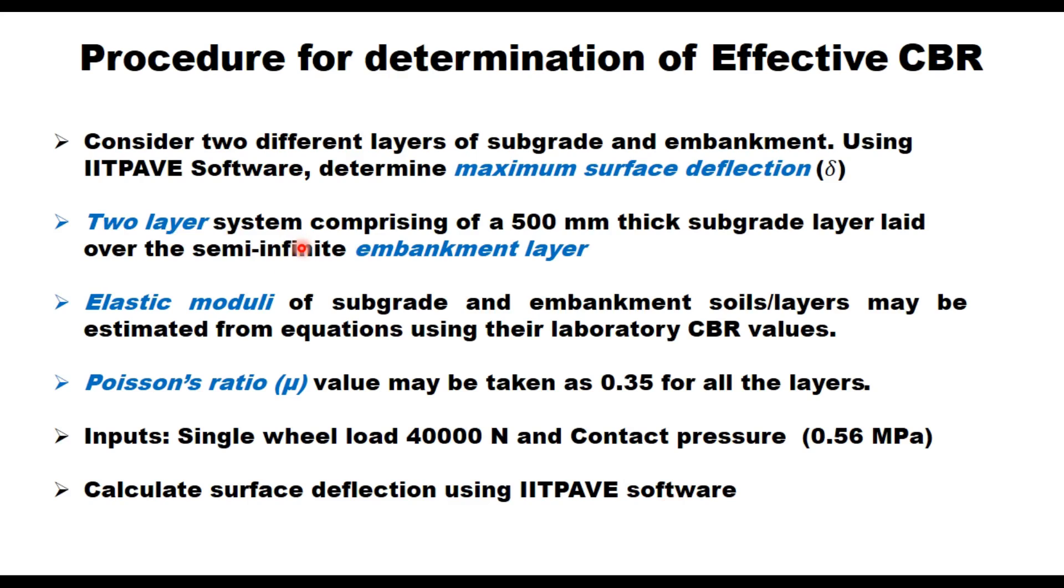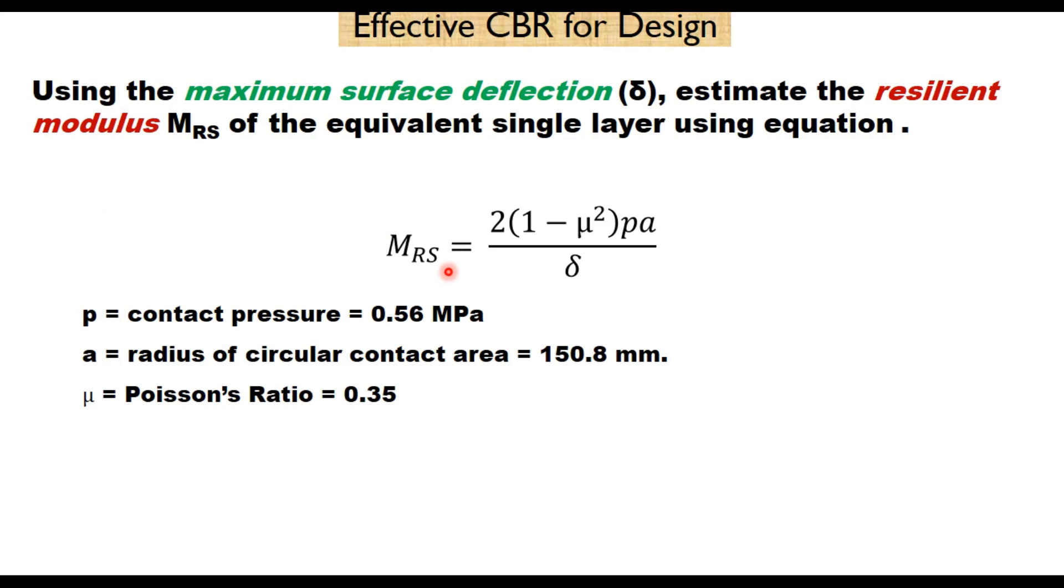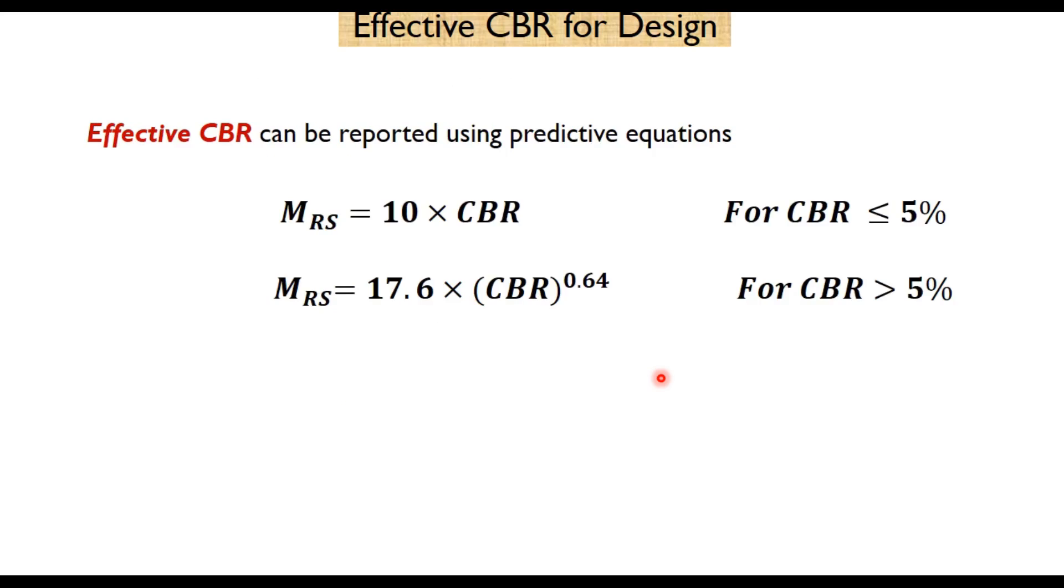This surface deflection is used to determine the resilient modulus of the single layer. Using the maximum surface deflection, estimate the resilient modulus MR of equivalent single layer using this equation. This equation is taken from Boussinesq theory where MRS is resilient modulus of subgrade, μ is the Poisson's ratio which is taken 0.35, small p is the contact pressure 0.56 MPa and A is the radius of circular contact area that is 150.8 mm. That is how we determine the effective MRS and using that MRS you can recalculate CBR value.